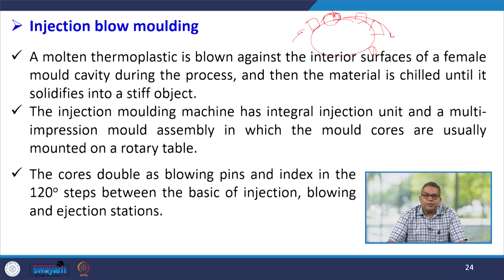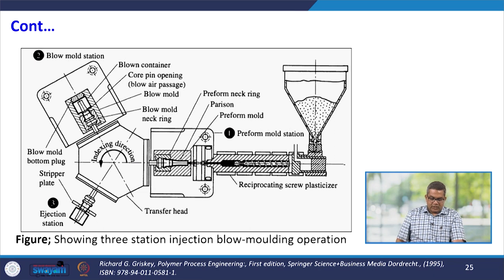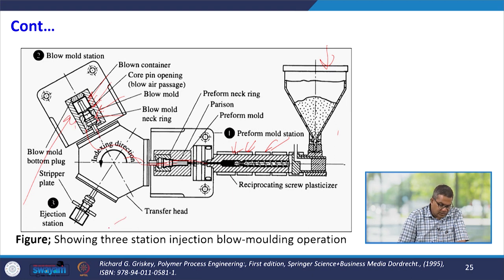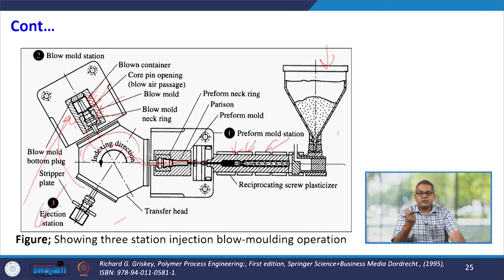The cores and blowing pins index in 120-degree steps between the injection, blowing, and ejection stations. In the three-station injection blow moulding operation, the preform passes through the nozzle to the blow moulding station. Here there is a blow moulding neck ring, blow air passage, and the blown container. The ejection station provides proper retention time for cooling before removing the finished product.